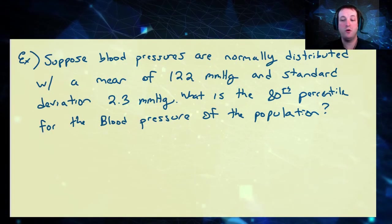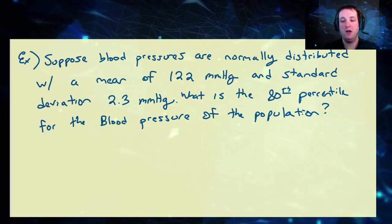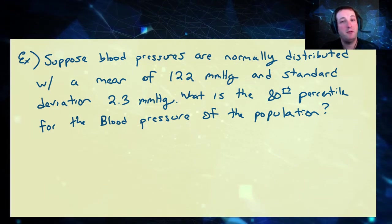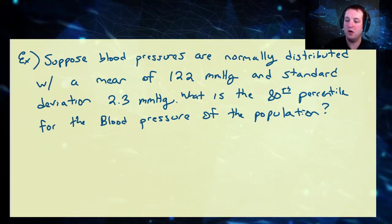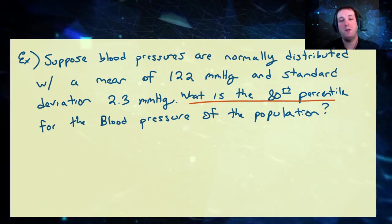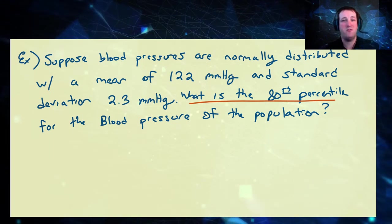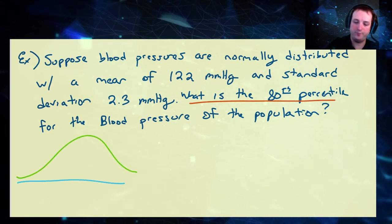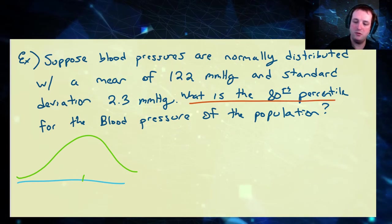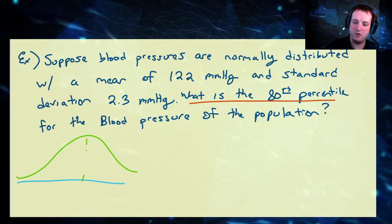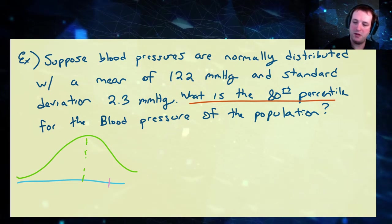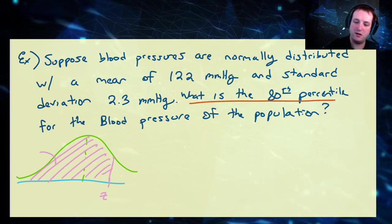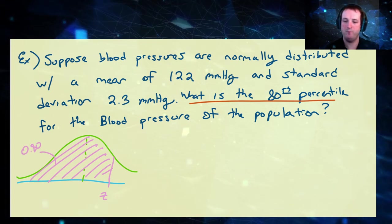Now let's look at real-world applications. Suppose blood pressures are normally distributed with a mean of 122 millimeters of mercury and a standard deviation of 2.3 millimeters of mercury. What is the 80th percentile for the blood pressure of the population? This means 80% of the population has a blood pressure of this number or less. Since the 80th percentile is above 50%, our corresponding value is going to be larger than 0 on the z-score scale, so we want this area to be equal to 80%.